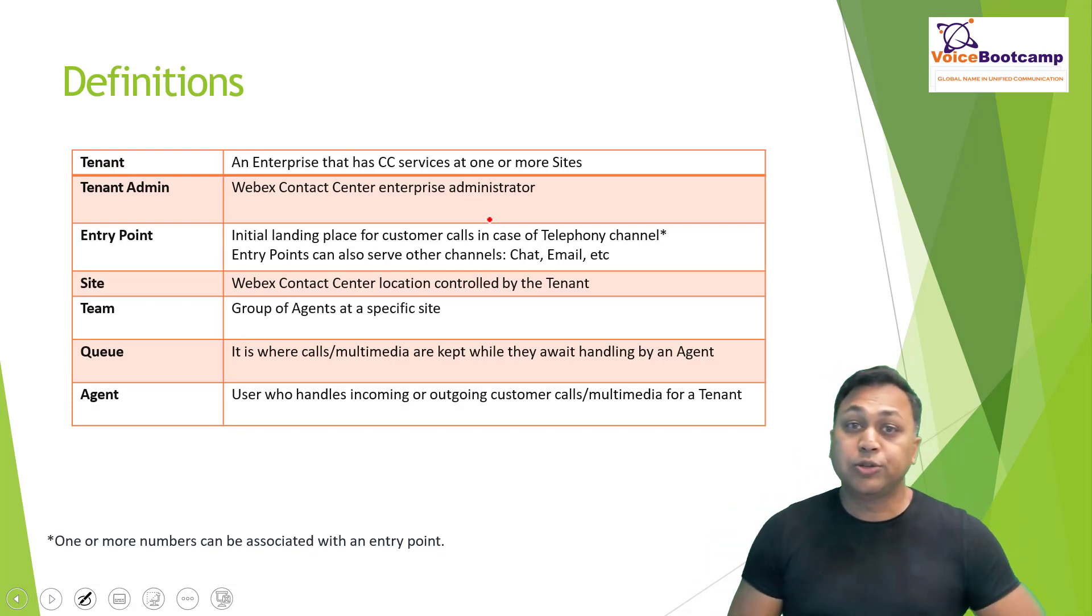Team admin, which is the administrator responsible for managing your company's profile. Entry point, initial landing place for your customer calls. In this case, telephone number, the user dial or voice chat or email. Site represent a location controlled by that particular tenant. If you have a branch office in UK, you have a branch office in Dubai, and your head office is in Toronto, Canada, you will create two sites at least, or three sites, one for each location. Obviously, team is for the group of agents with a specific team, team could have an agent, more than one agent, as well as a supervisor. Queue is where usually the call will be queued by the agent, and every contact center queue concept remains the same. This is where the call comes in. First, let's look for an agent based on availability. If agents are in a ready mode, the agent will be selected based on a certain algorithm, and then it can point to that particular agent by transferring the call. One or more numbers can be associated with an entry point as well.